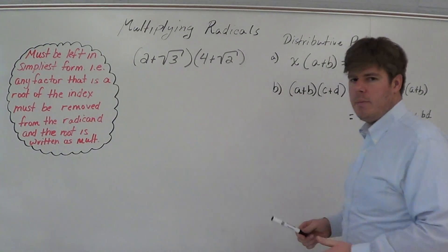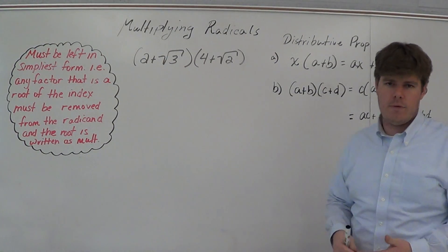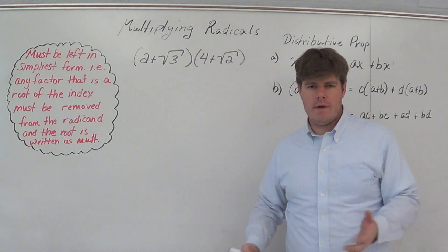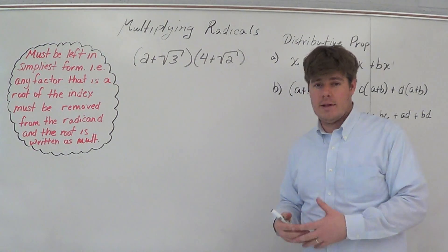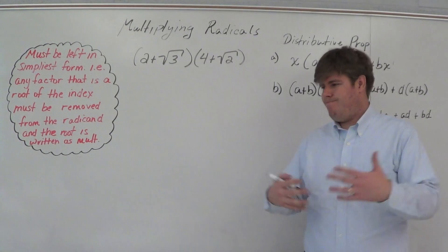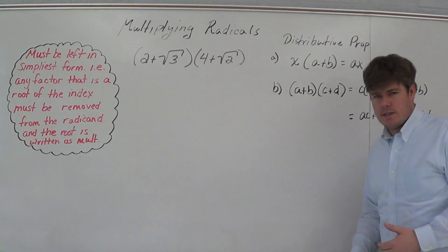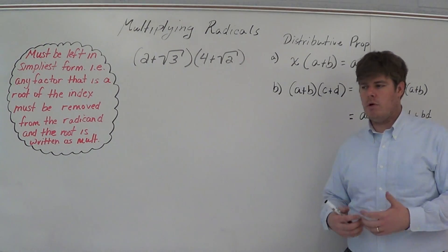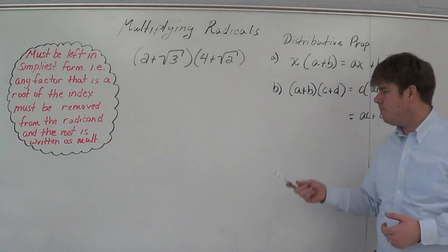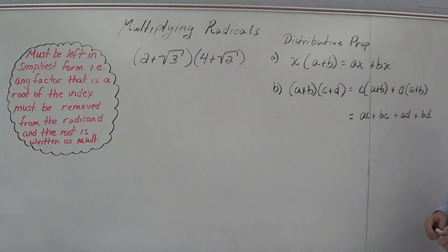Some people are very familiar with this being called the FOIL method. I don't like to call it the FOIL method because why remember something that works for only one thing — a binomial times a binomial — and there's no other thing FOIL is used for besides that. I think it's a cheap trick to try to get kids to learn something. I just like to use the distributive property.